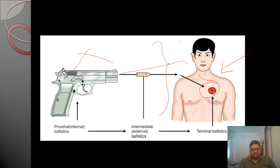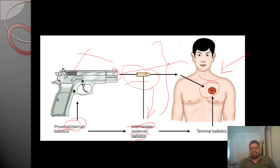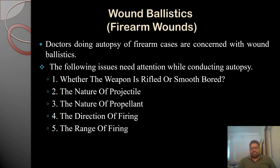In simpler terms, internal ballistics is also called proximal ballistics, and external ballistics is also called intermediate ballistics. The changes that occur between the muzzle end and the target fall under intermediate or external ballistics. Once the bullet hits the individual, the changes that occur fall under terminal ballistics or wound ballistics.